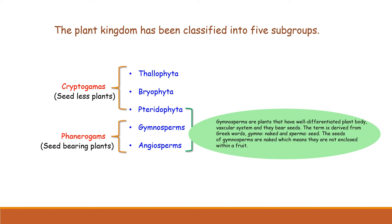Another important group is Gymnosperms. Gymnosperms are seed-bearing plants, but their seeds are naked. 'Gymno' means naked and 'sperma' means seeds. They do not bear flowers. Normally, the ovule is inside the ovary, and the ovary becomes the fruit enclosing the seed. But in gymnosperms, the ovules are naked, so the seeds are also naked — they are not enclosed within the ovary or fruit.